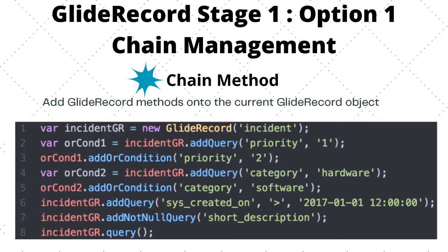With the chain method option, we add and chain methods to the current GlideRecord object. On line one we create a GlideRecord, then start chaining methods. This query reads: find all priority one incidents or priority two incidents, with a category of hardware or software, created after January 2017, where the short description contains 'test' or the short description is not null.